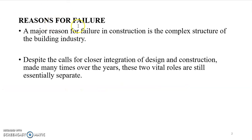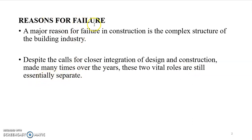So what are the reasons for the failure of buildings? A major reason for failure in construction is the complex structure of the building industry. Despite the calls for closer integration of design and construction made many times over the years, these two vital roles are still essentially separate.